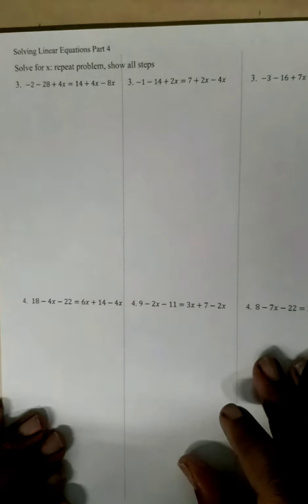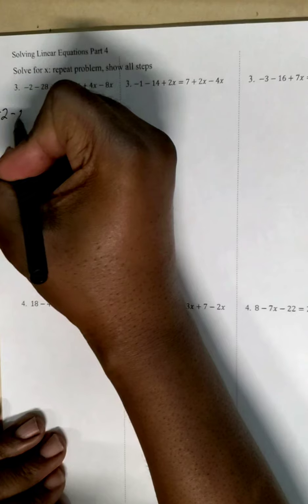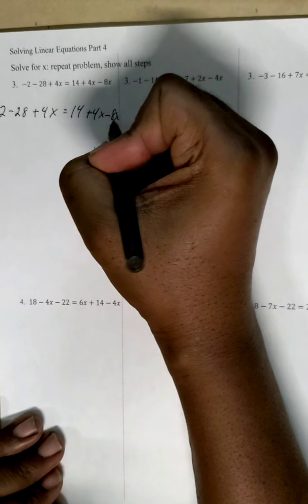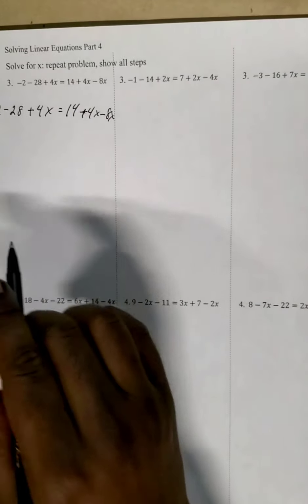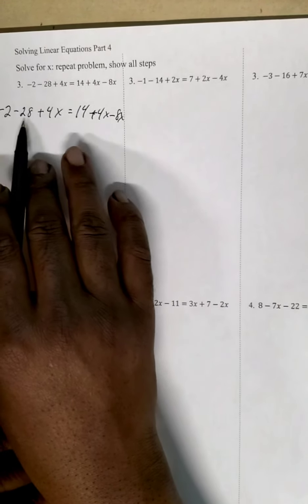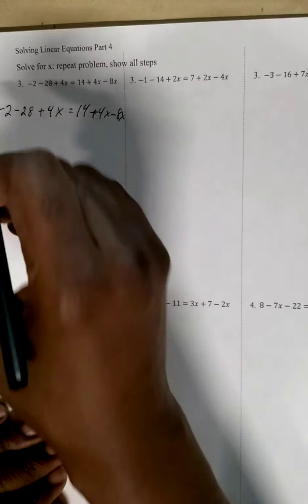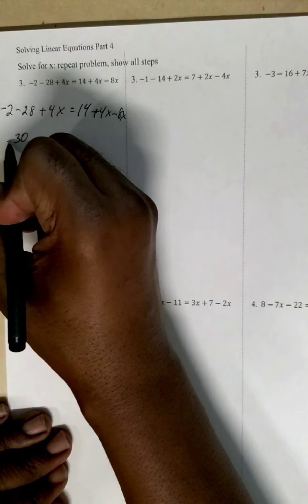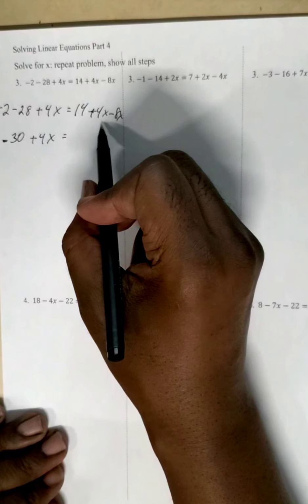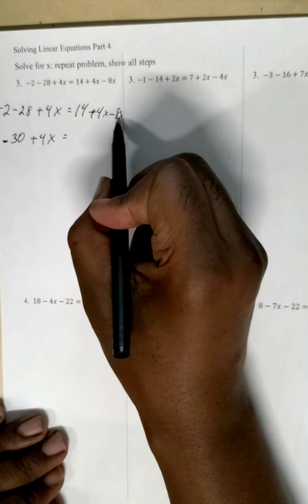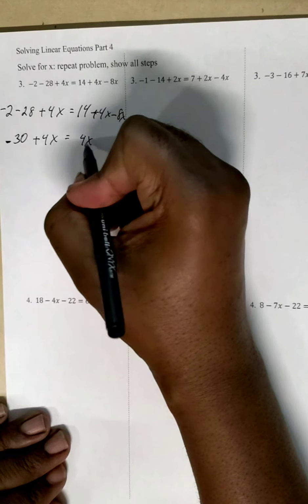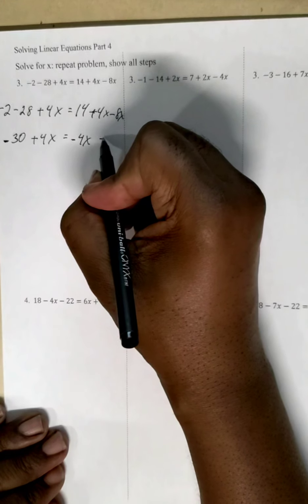Next, we have negative 2 minus 28 plus 4x equals 14 plus 4x minus 8x. First, I'm going to look for common terms. The 2 and the 28 are like terms — same signs add, so 2 and 28 adds up to a negative 30, plus 4x equals. On the right side, 4x and negative 8x combine — different signs subtract — giving negative 4x, and we bring down the positive 14.